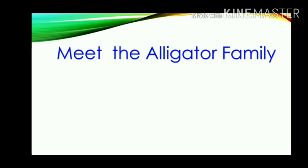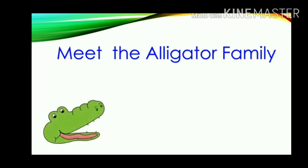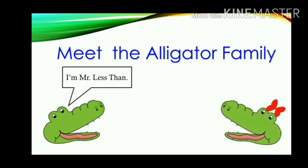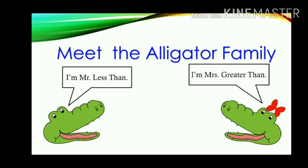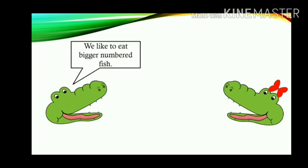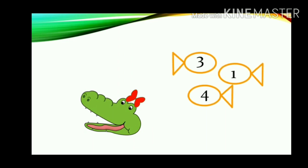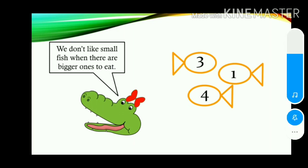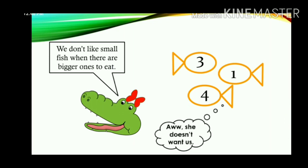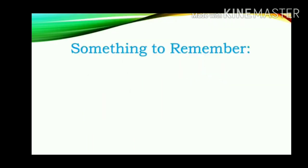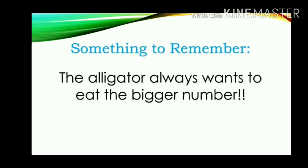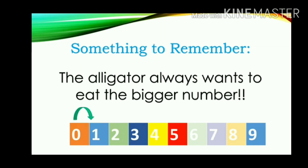Now we will meet the alligator family. The alligator tells us: I am Mr. Less Than. I am Mrs. Greater Than. These are both Mr. Less and Mrs. Greater — we like to eat bigger numbers. We won't like small fish when there are bigger ones to eat. The alligator always wants to eat the bigger number — they don't like the smaller number.